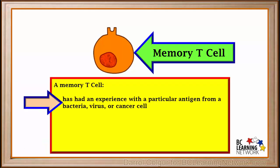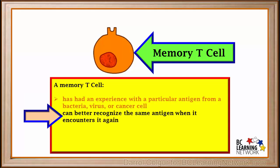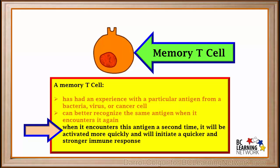A memory T cell has had an experience with a particular antigen from a bacterium, virus, or cancer cell. Therefore, it can better recognize the same antigen when it encounters it again at a future time. So when it encounters this antigen a second time, it will be activated more quickly, it'll clone faster, and it will initiate a quicker and stronger immune response.